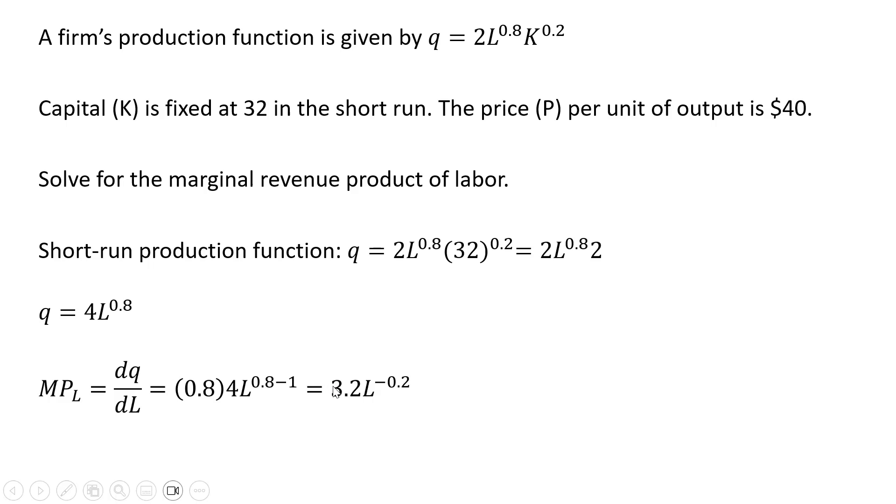0.8 times 4 is 3.2. Then we need to subtract 1 from this exponent, and that is the marginal product of labor. This is the increase in output from hiring one more worker.